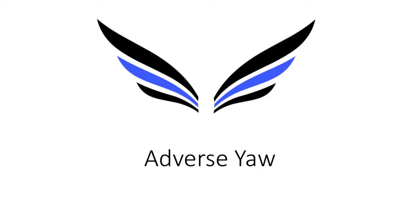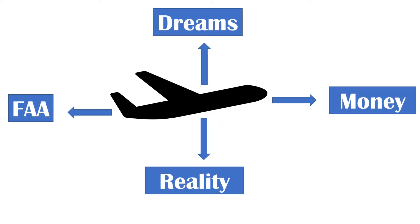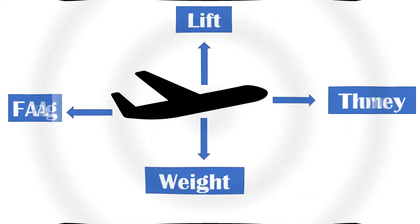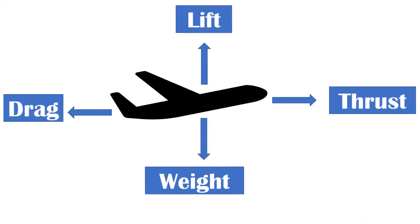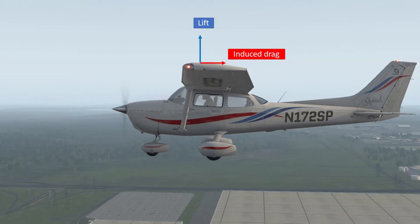Before we can talk about adverse yaw, let's review some of the basics. What are the four forces of flight? There we go — thrust, lift, drag, and weight. When you have the four forces in balance, you achieve straight and level unaccelerated flight. Induced drag is a consequence of lift and is produced by the passage of an airfoil through the air.